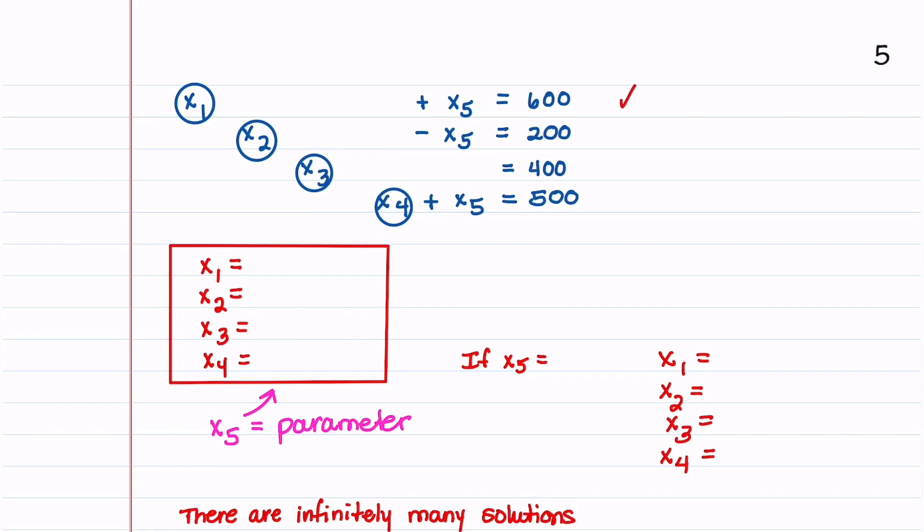If we look at our first equation we can solve for x1 by moving x5 to the right hand side. So we get x1 equals 600 minus x5. For the next equation, x2 is 200 plus x5. For the next two equations, x3 is 400, and x4 equals 500 minus x5.